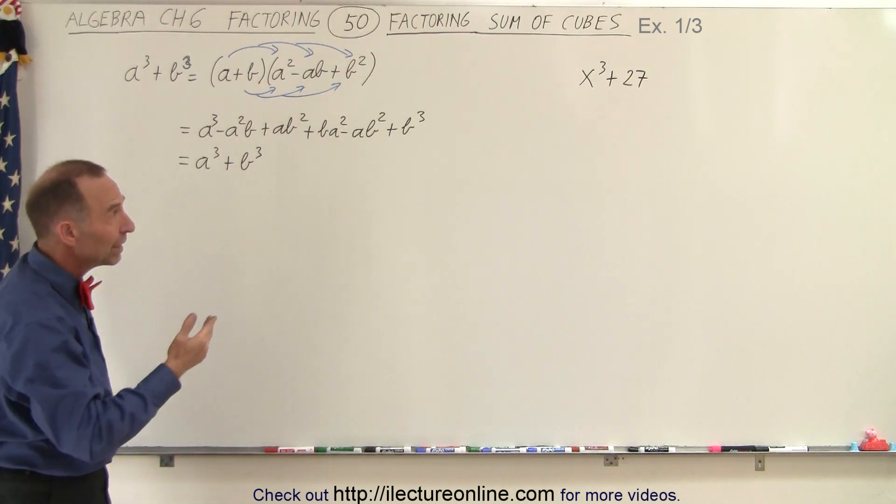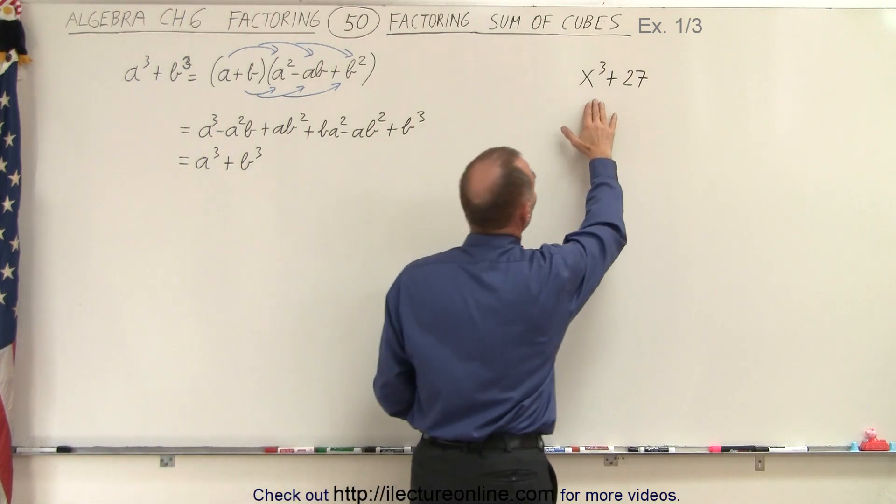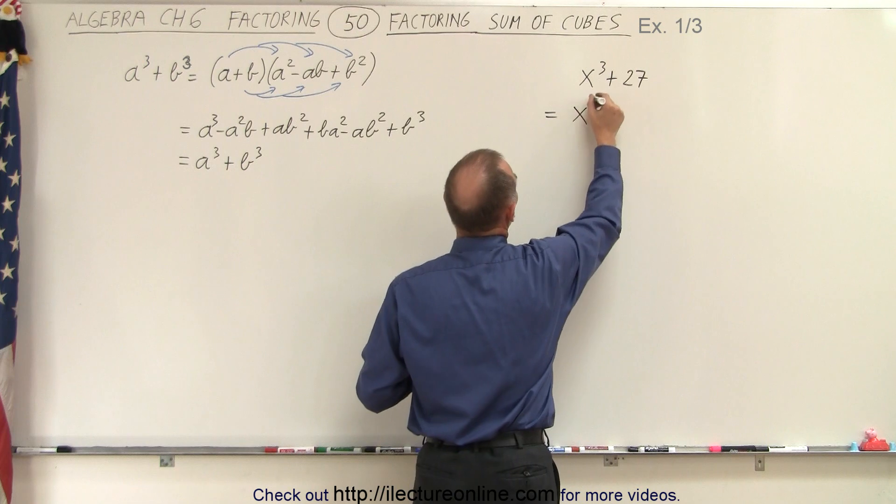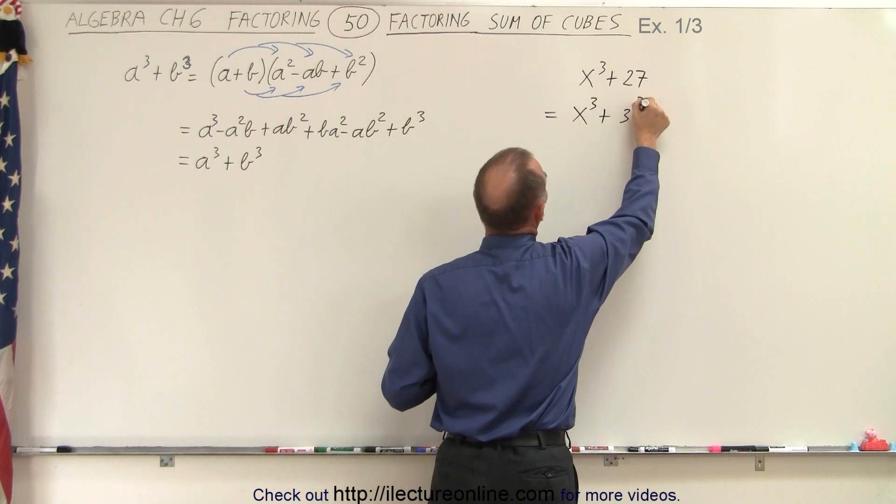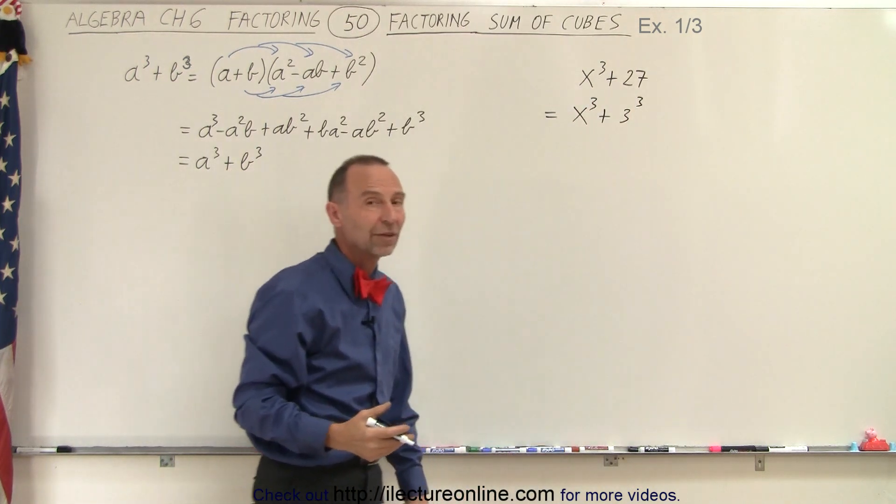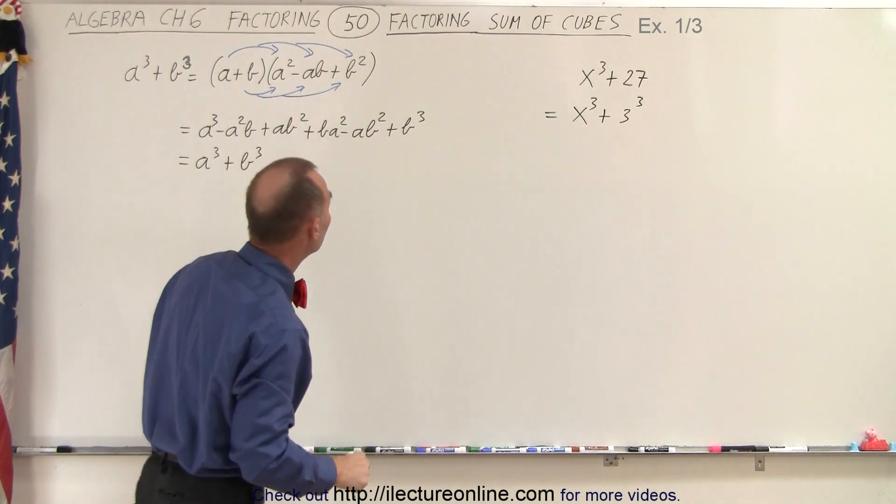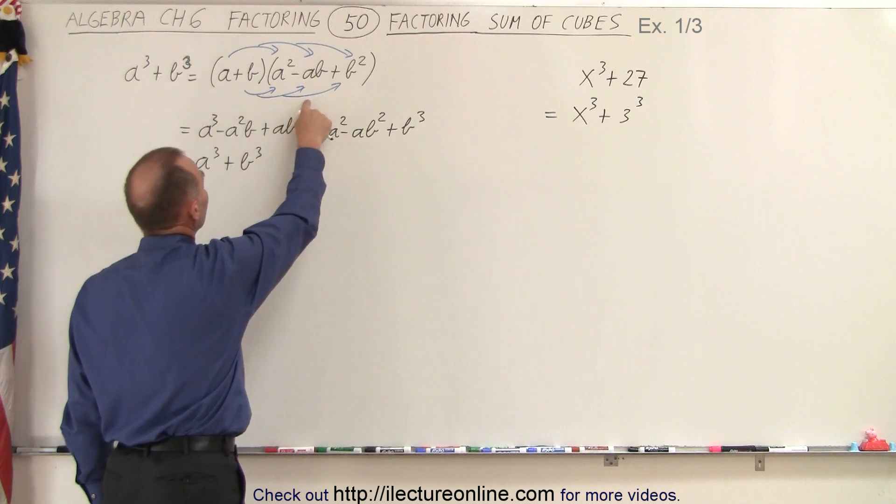Sometimes, we need to change things just a little bit and realize that x cubed plus 27 can actually be written as x cubed plus 3 cubed, because 3 cubed is indeed 27. And then it becomes clear that this is indeed the sum of cubes, and we can use the very same techniques.